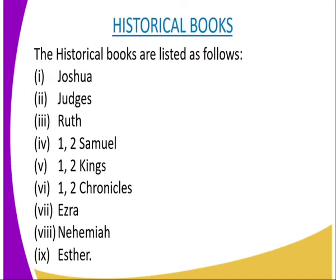Then we have the historical books. We have the Book of Joshua, the Book of Judges, the Book of Ruth, then 1st and 2nd Samuel, 1st and 2nd Kings, 1st and 2nd Chronicles, the Book of Ezra, the Book of Nehemiah, and the Book of Esther. Those are the historical books in the Old Testament.